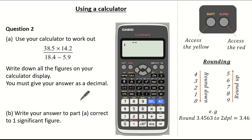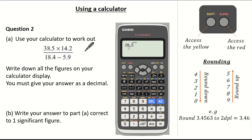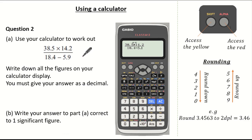So remember access your fraction button first so the question looks like this on your calculator screen. Then inputting 38.5 times 14.2. Don't forget to use your cursor keys to go down so we can input our calculation on the bottom, which is 18.4 subtract 5.9. Remember the exam question will look the same on your calculator display.